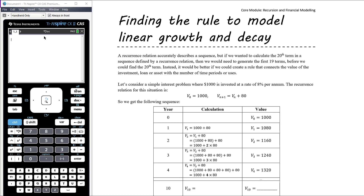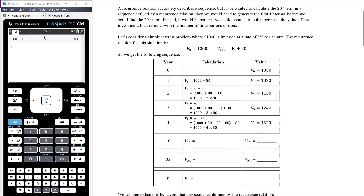Let's look at a simple interest problem where $1,000 is invested at a rate of 8% per annum. The recurrence relation is: V₀ = 1000, and Vₙ₊₁ = Vₙ + 80, since $80 is 8% of $1,000 — verified as 0.08 × 1000 = 80 dollars.